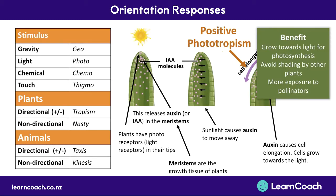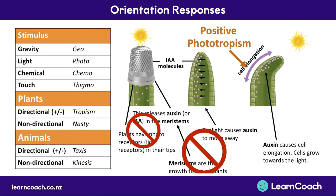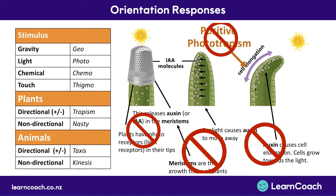You might wonder how people know all this goes on inside plants. A simple experiment proves it: on the end of the plant shoot they placed a thimble — something that stopped the photoreceptors receiving any light, effectively blinding the plant. When they did this, no auxin was released in the meristems, so auxin didn't move away from the sunlight, meaning no cell elongation occurred and no positive phototropism was observed.